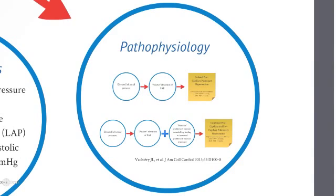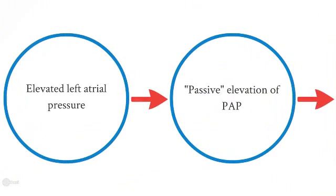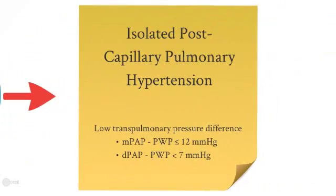Postcapillary pulmonary hypertension can be further subdivided into isolated postcapillary pulmonary hypertension, and combined postcapillary and precapillary pulmonary hypertension. In the first case, an elevated left atrial pressure leads to a passive elevation of pulmonary arterial pressure. This is isolated postcapillary pulmonary hypertension.